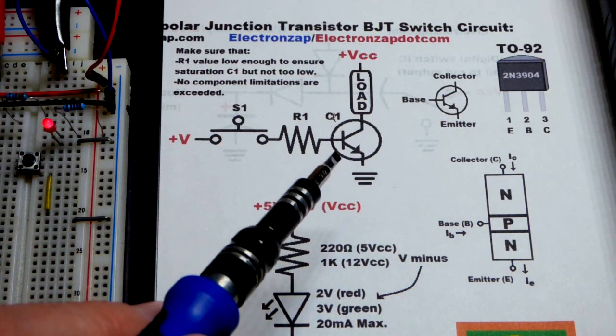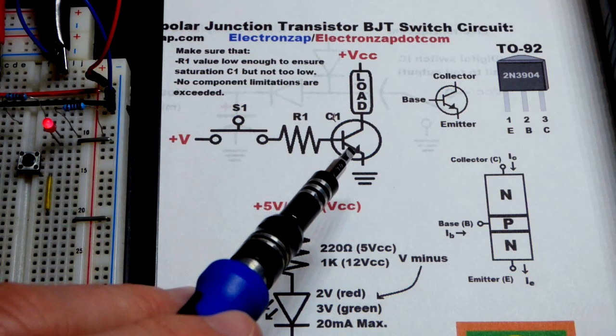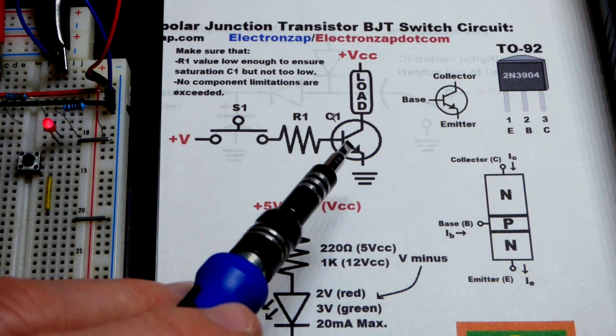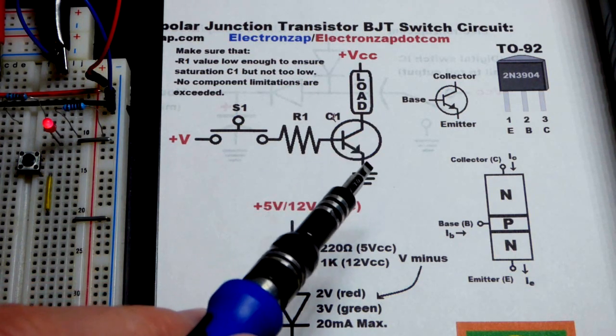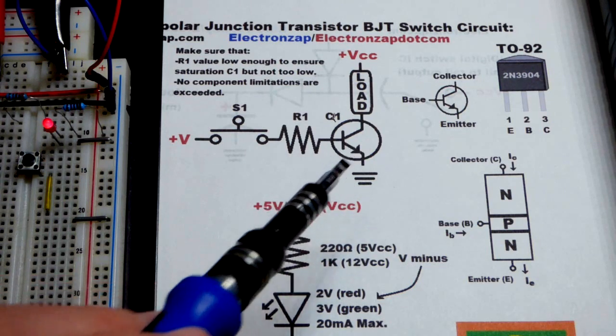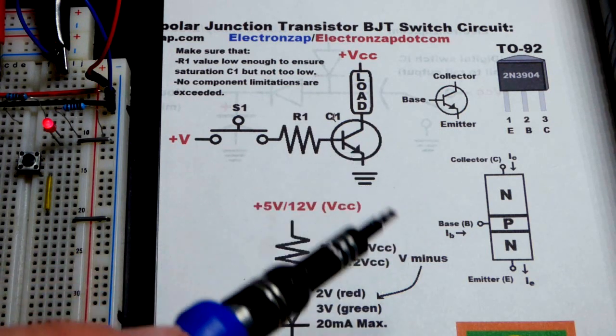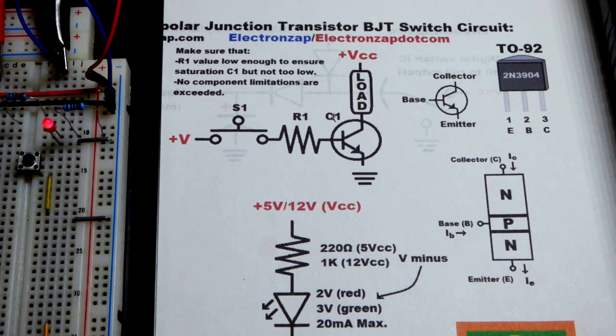So there's the schematic symbol for the NPN bipolar junction transistor. The arrow is not pointing in, NPN. There's also the PNP where the arrow points in. But in this case, we're going to take a small current.